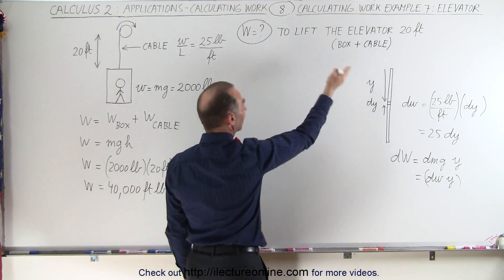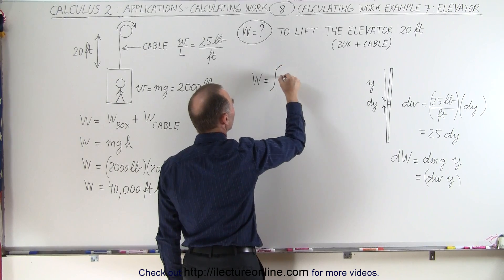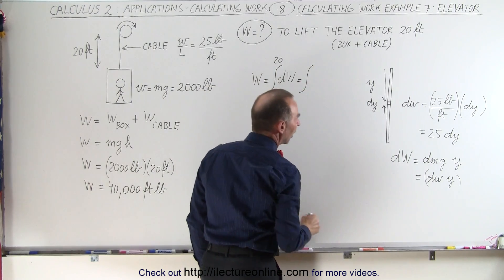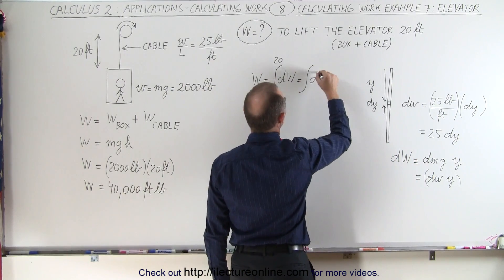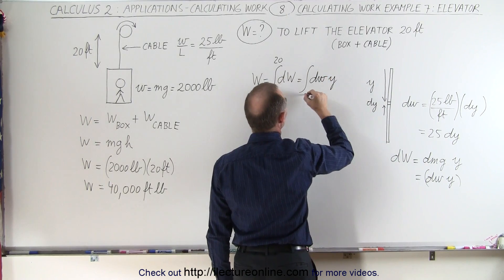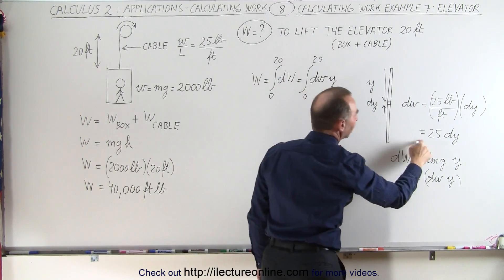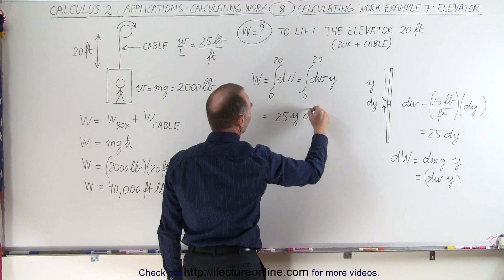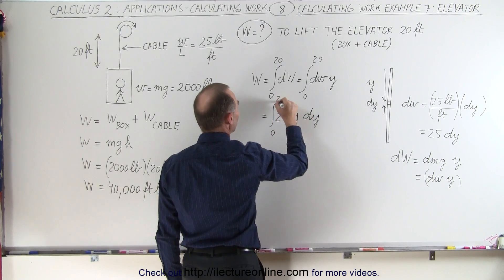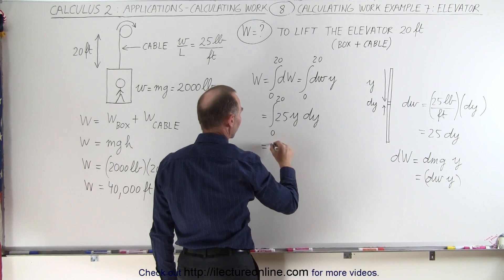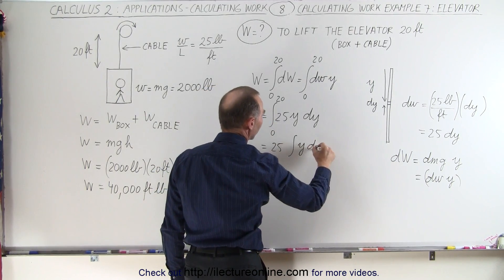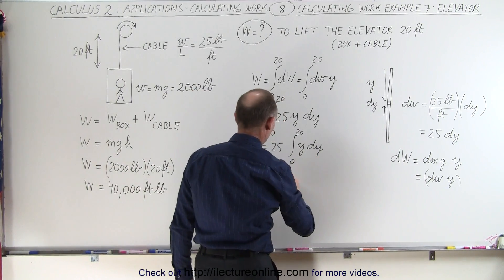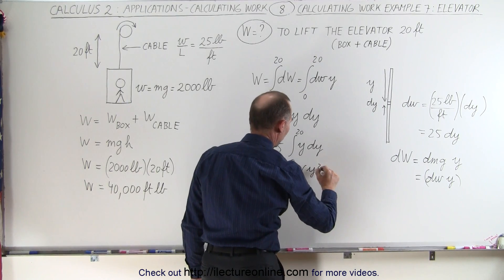To get the total work done to lift the whole cable, the work equals the integral of all the little dW's from y = 0 to y = 20 feet, which equals the integral of dw × y from 0 to 20. Since dw = 25 dy, this becomes the integral of 25 × y × dy from 0 to 20. Taking the 25 out, this becomes 25 times the integral of y dy from 0 to 20, which integrates to 25 times y²/2.